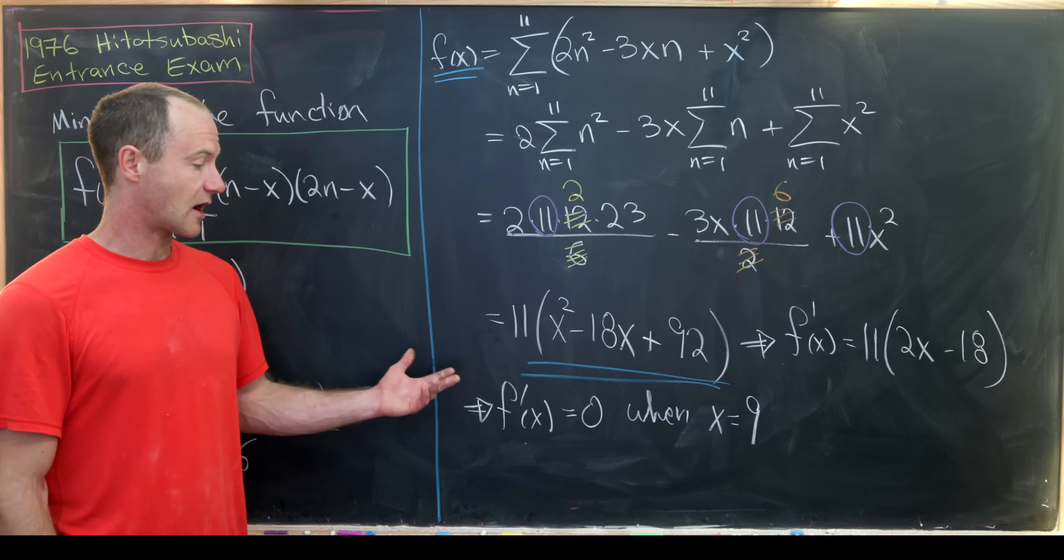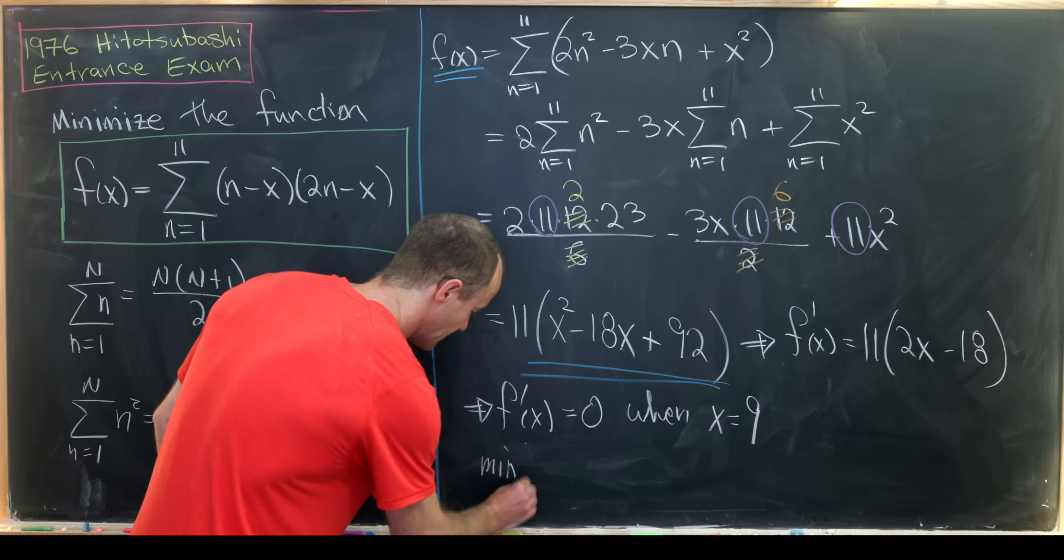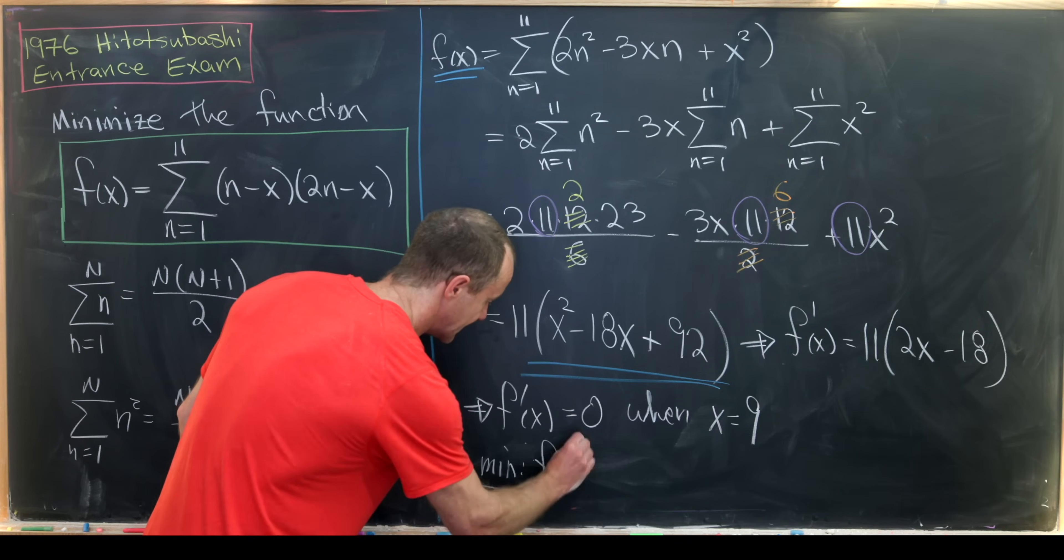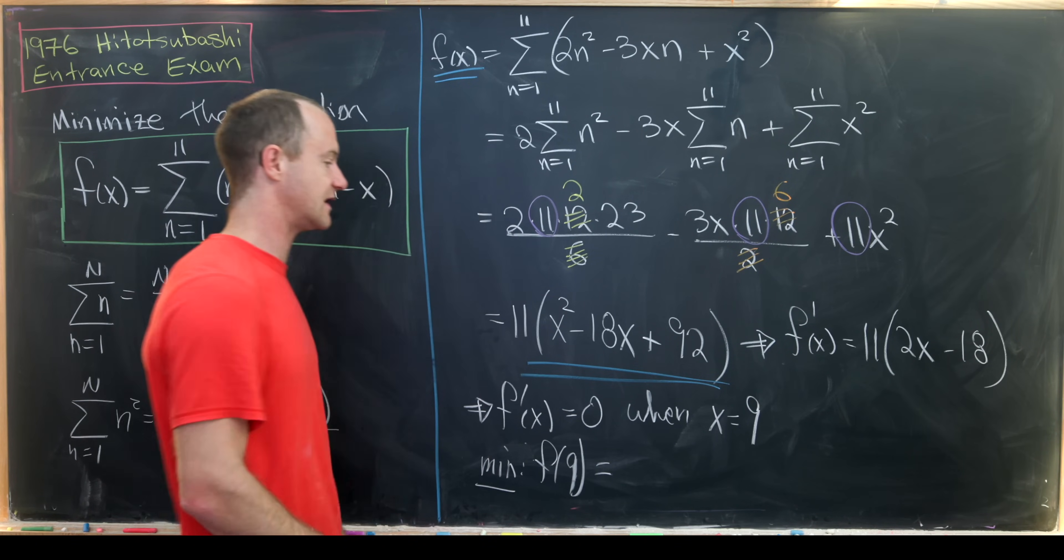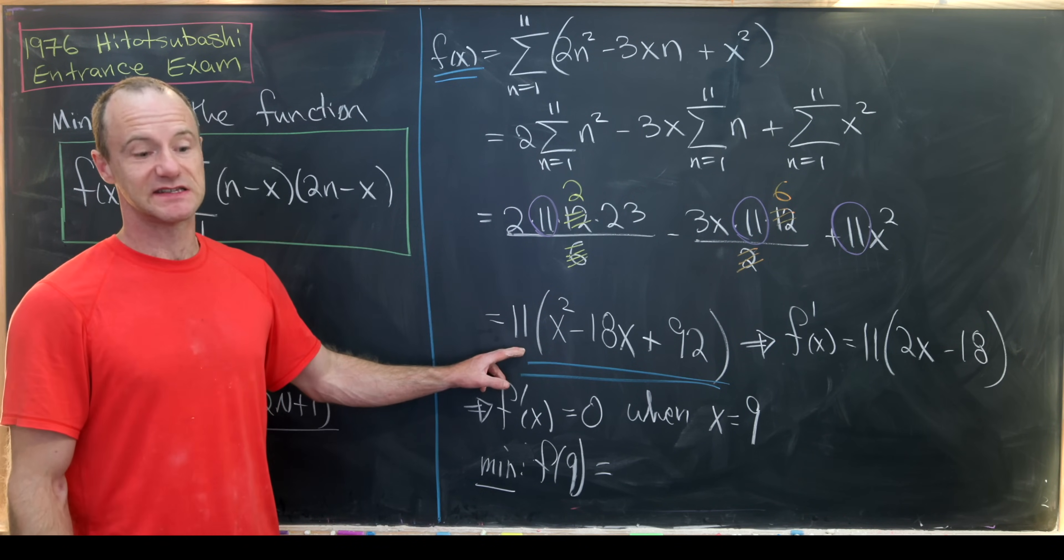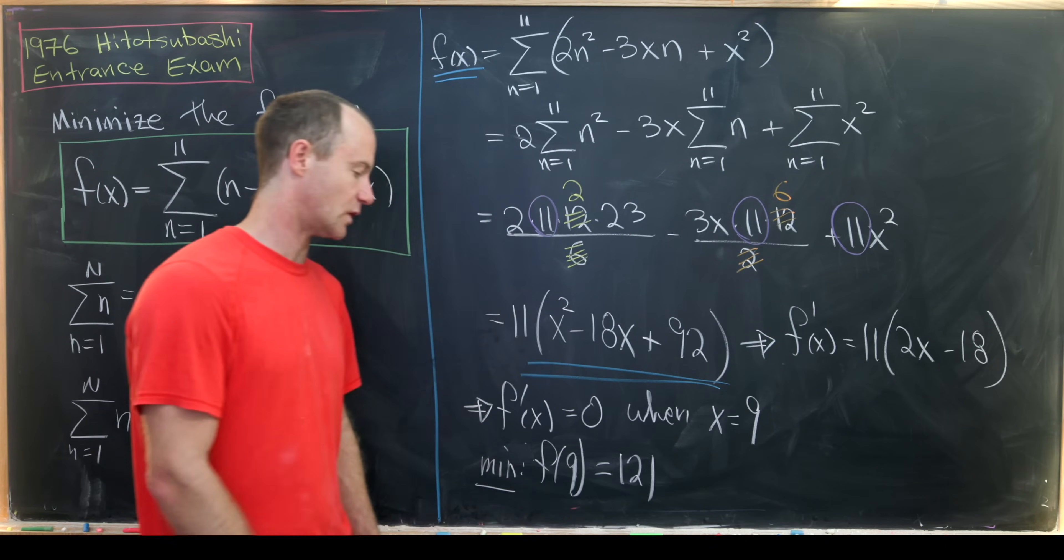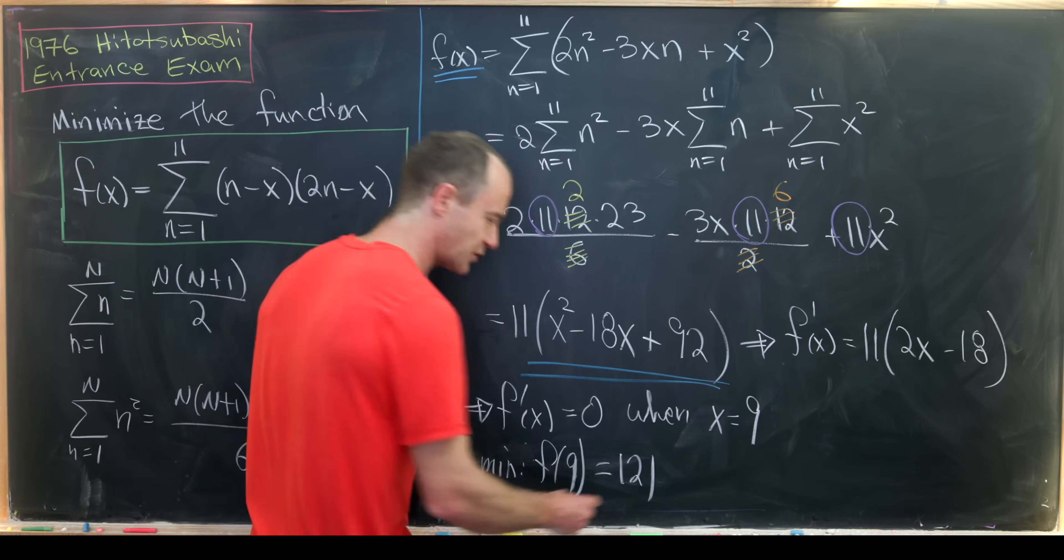Okay, then our minimum will occur at this point. So that means our minimum will be f evaluated at 9 and that's just a matter of plugging 9 into maybe this version of our function and simplifying.